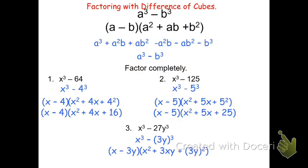Now the reason I say (3y)² is I'm going to square both the 3 and the y. So this is going to become (x - 3y)(x² + 3xy + 9y²).